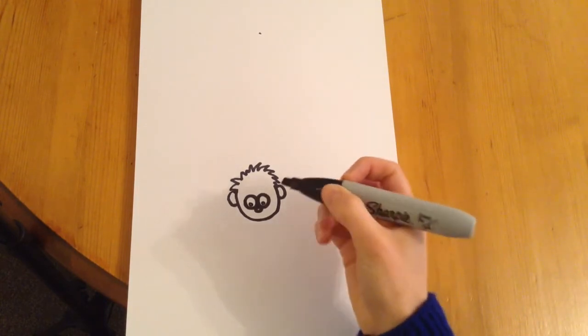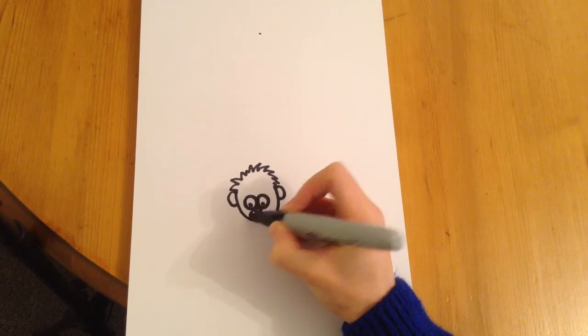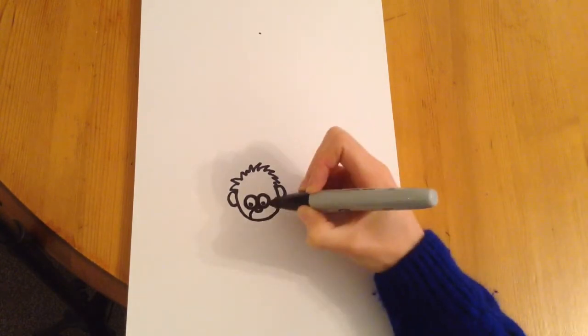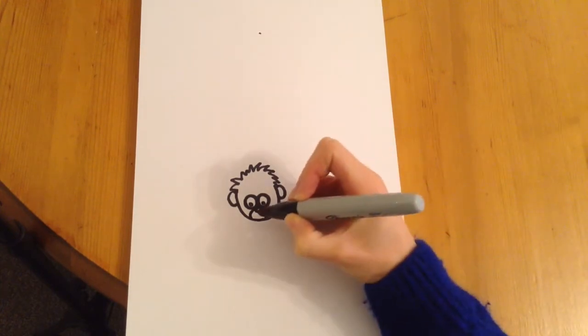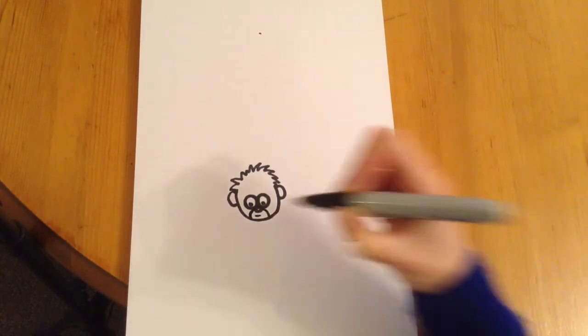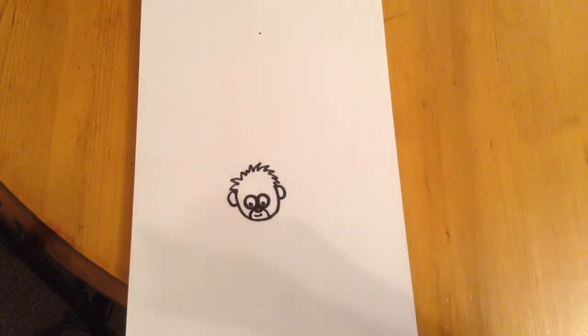Now we're going to start the mouth. So if you do a curvy line coming from the nose to the bottom of the face, and we'll do another one on the other side like that, and then a little mouth, so just a tiny little mouth like that. Oh, let's make him a little bit more smiley, he doesn't look very smiley, does he? There we go, he's a little bit more smiley now.